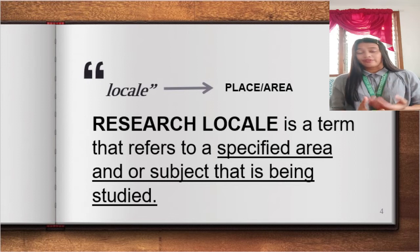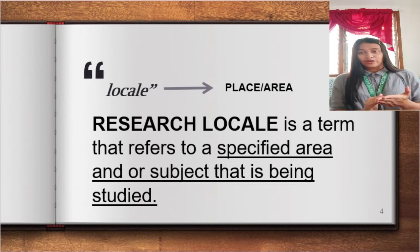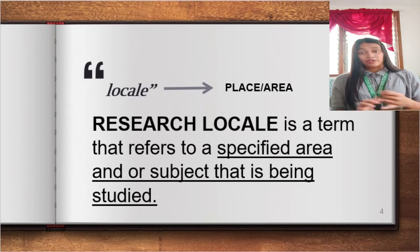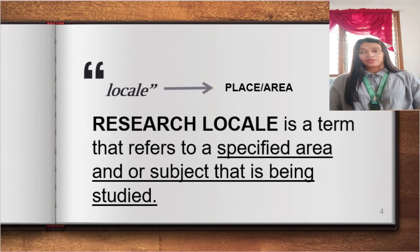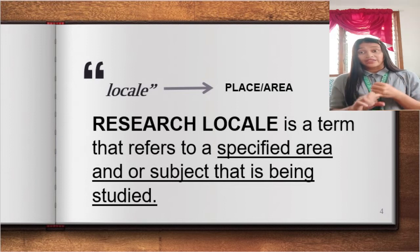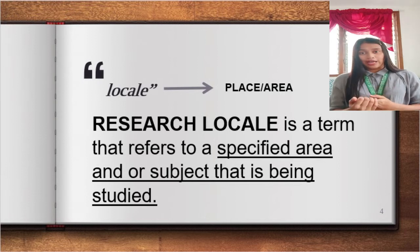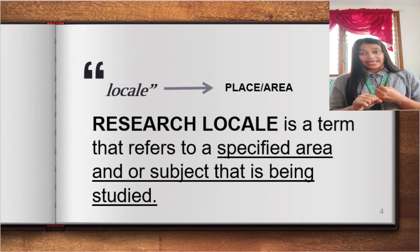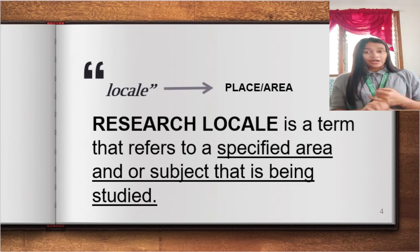For example, if your target respondents are the Novarians — and by the way, 'respondent' is the term used in quantitative research for the research subject or participants — if your research respondents are the Novarians, of course you need to include in your research locale the name of the school and its address. For example, Navarro National High School, Lasang, Davao City.